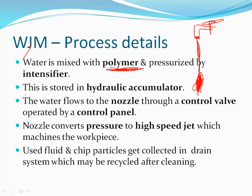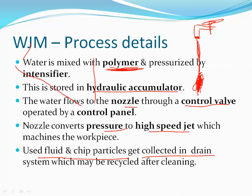The water is pressurized by the intensifier, stored in the hydraulic accumulator, and then flows into the nozzle through a control valve. The control valve regulates pressure and flow rate. The nozzle converts pressure energy to a high-speed jet. When this high-speed jet falls on the workpiece, machining takes place. The used fluid and chip particles get collected in a drain — metal particles settle at the bottom while pure water at the top is taken and pumped further.